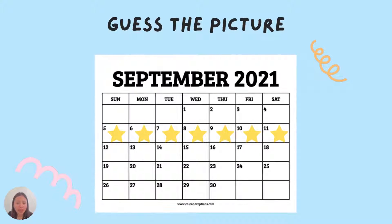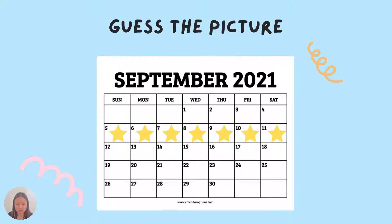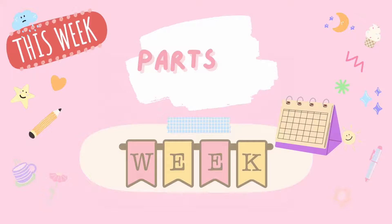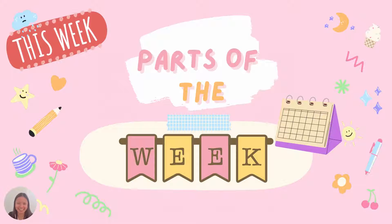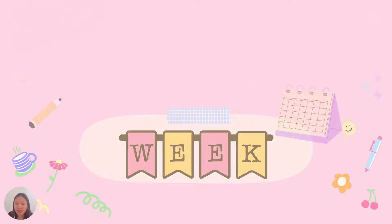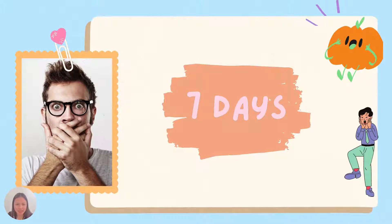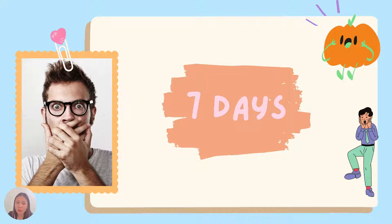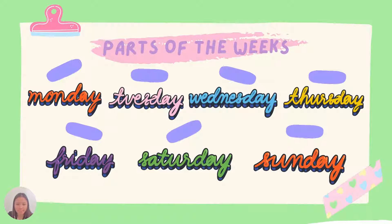So, what have you noticed about this picture? Yes, a calendar — but have you noticed that there are stars in each number? All right! Very good, Brent! So today, I will be discussing all about parts of the week. In a week, there are seven days.